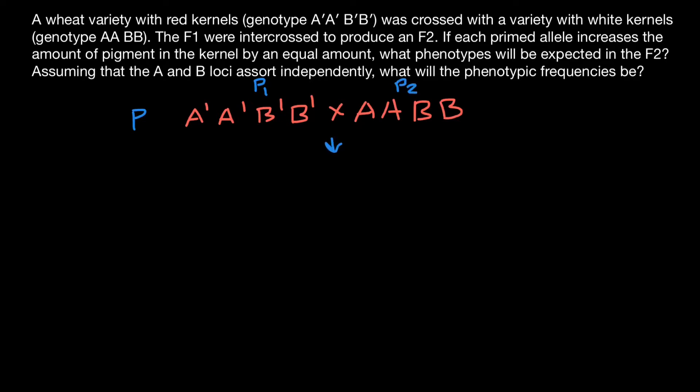And this is how we are going to get the next generation, which we call F1 generation. All the F1 generation are going to have one prime A allele from parent one and one A allele from parent two, one B' allele from parent one, and one B allele from parent two. And we also intercross, meaning self-cross, self-pollinate these plants. That means we cross with another same genotype.